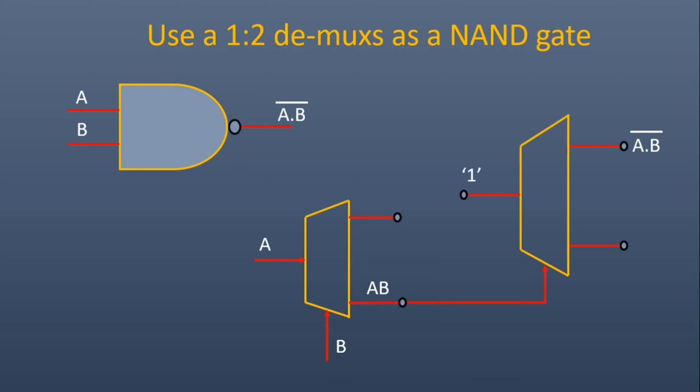For its implementation, we need two 1:2 demultiplexers. As we saw in the previous question, we implemented A dot B, that is an AND gate, using one 1:2 demultiplexer.